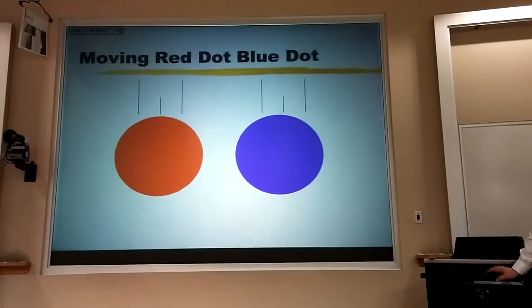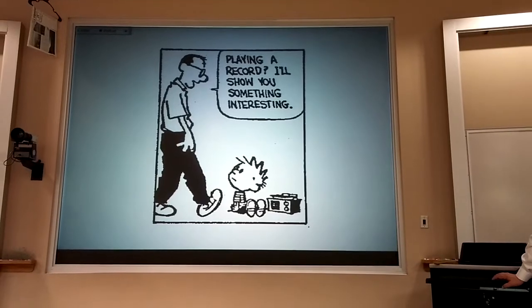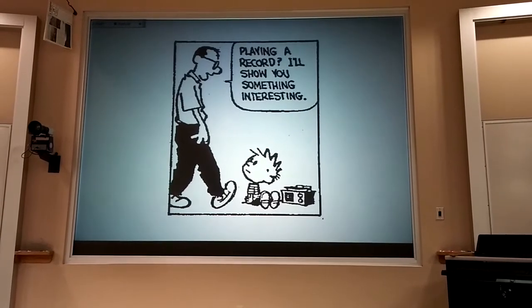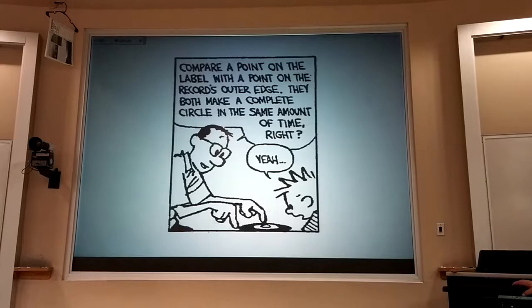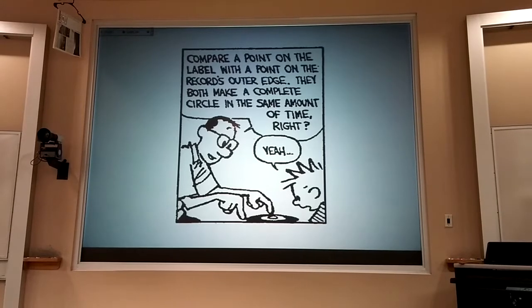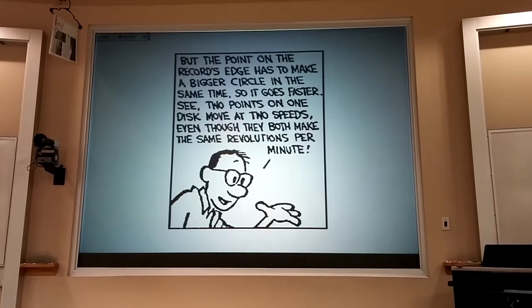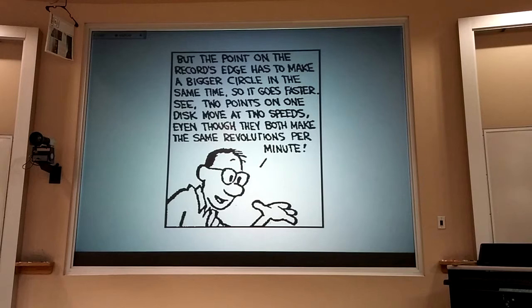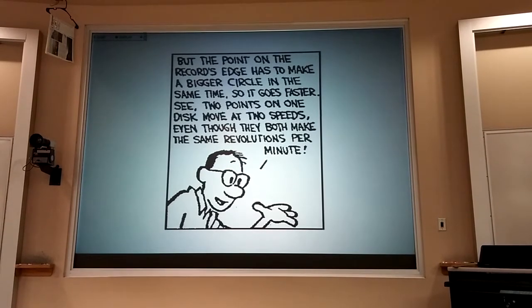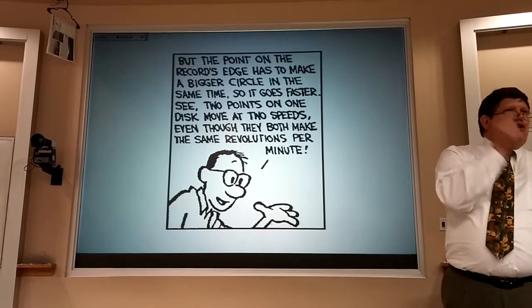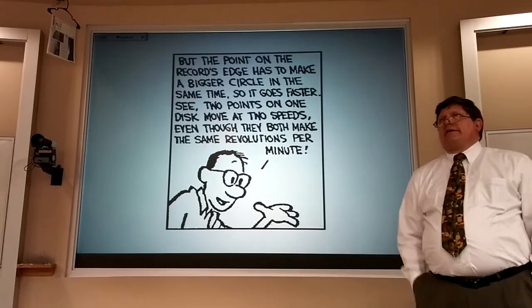I'm messing this up — I am not teaching this well. Let me turn it over to the master teacher, Calvin's dad. Playing a record — a record is a big old CD out of plastic. Compare a point on the label with a point on the record's outer edge. They both make a complete circle in the same amount of time, but the point on the record's edge has to make a bigger circle in the same time, so it goes faster. Two points on one disc move at two speeds, even though they both make the same revolutions per minute.